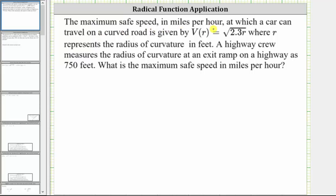The maximum safe speed in miles per hour at which a car can travel on a curved road is given by v(r) equals the square root of 2.3r, where r represents the radius of curvature in feet.